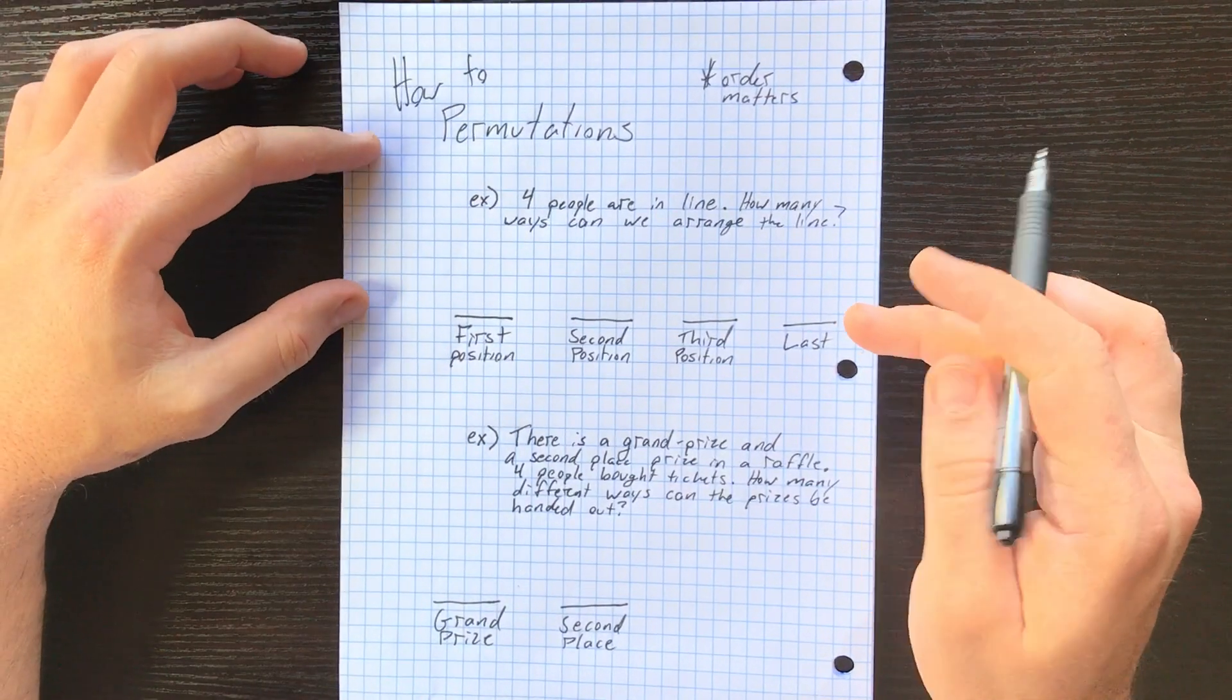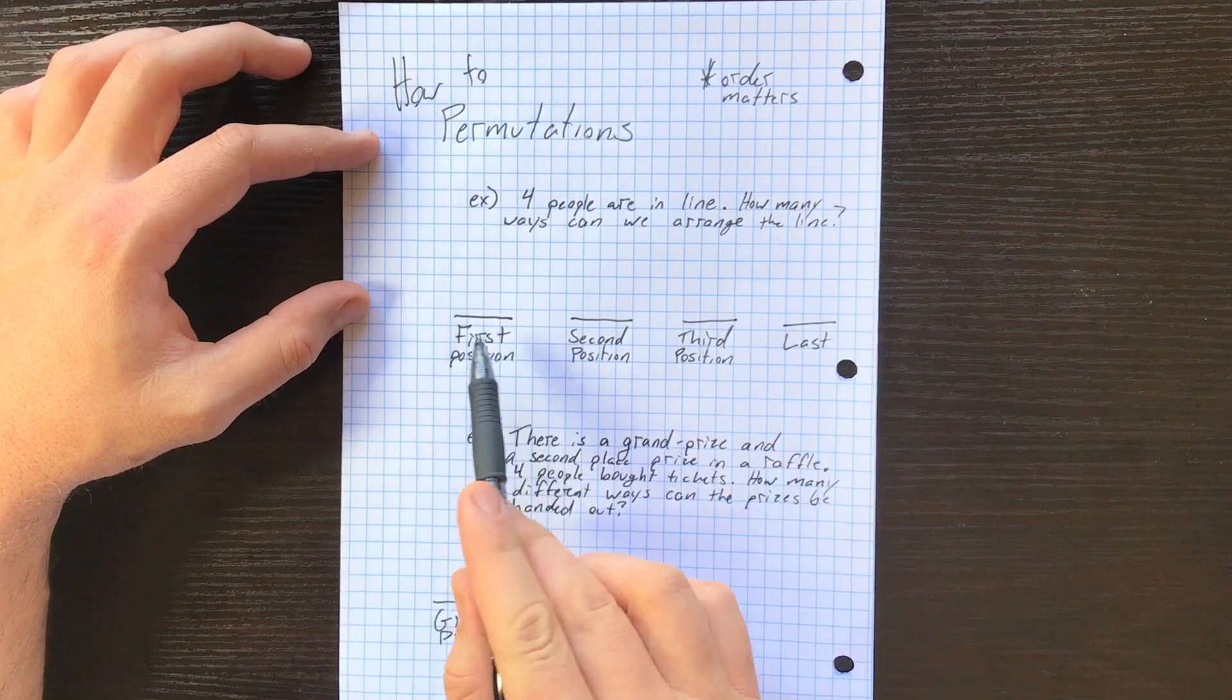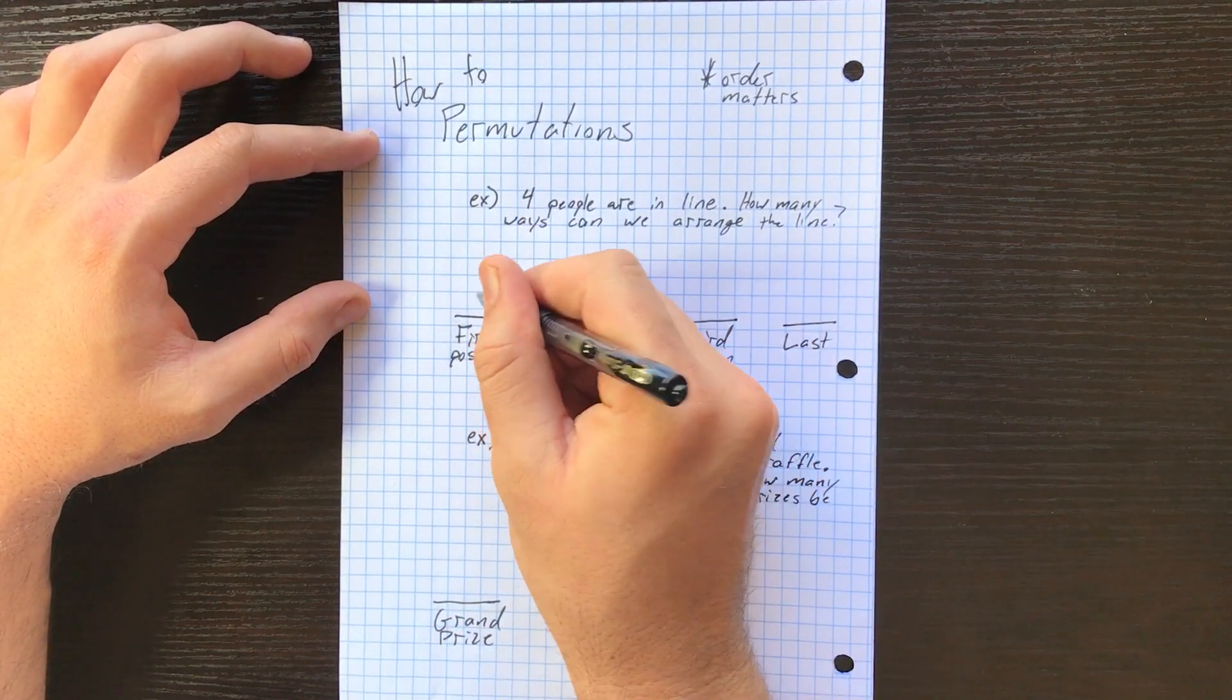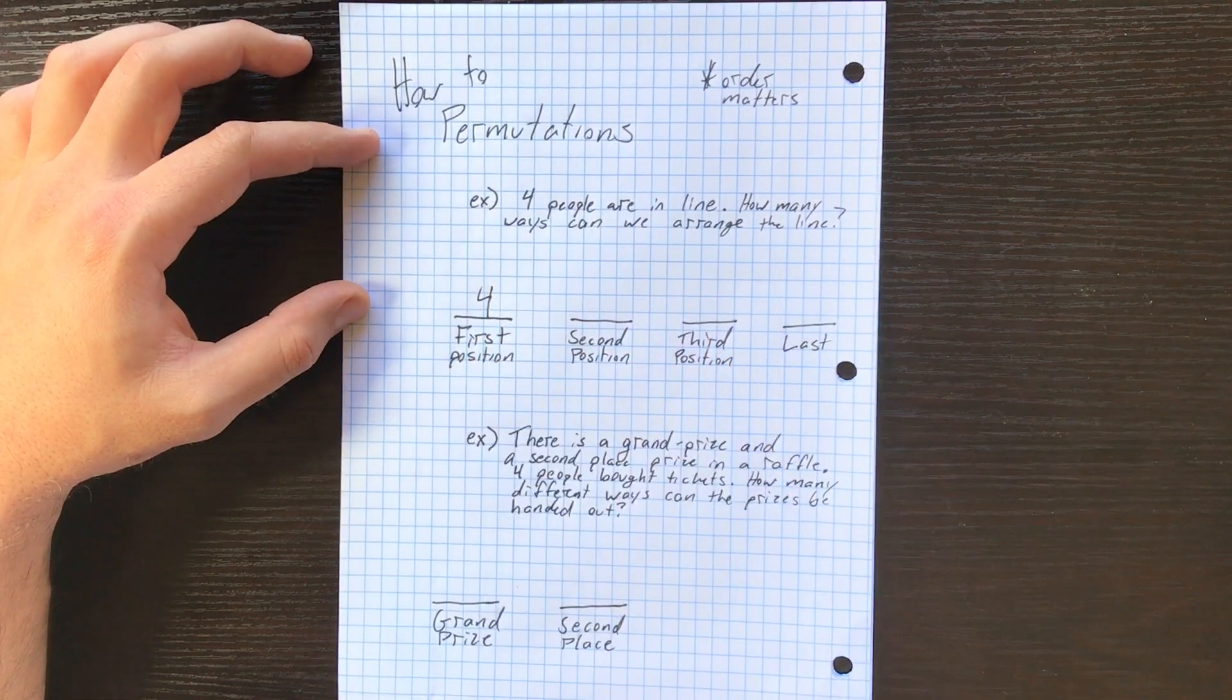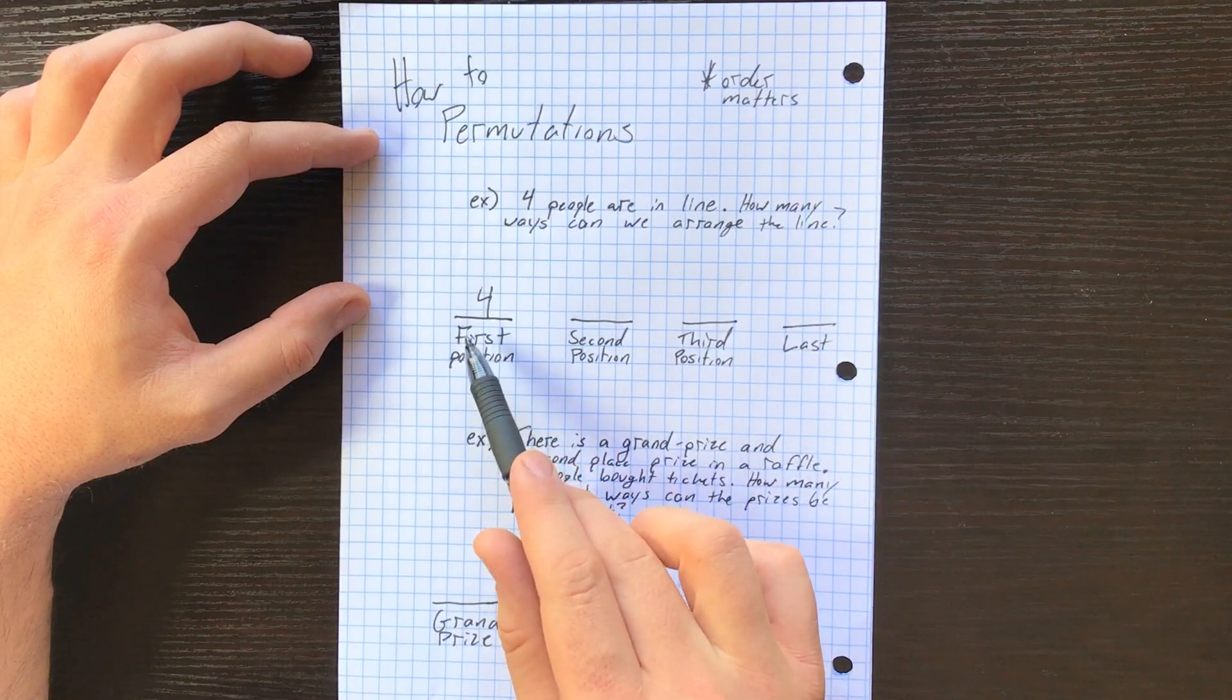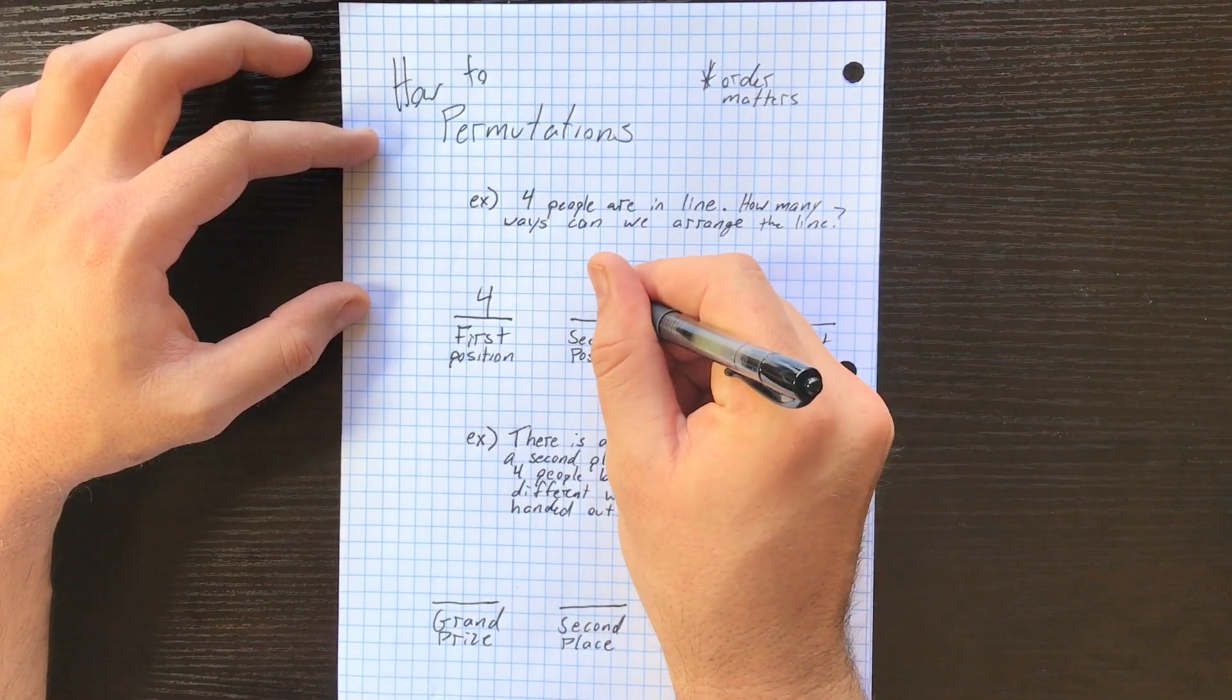How do we solve a problem like this? The first thing you need to do is think to yourself: how many people can get that first position? Well, there are four people in line, so four people could potentially occupy that spot. How many people could get the second position? Well, if we've already picked somebody for that first position, then we only have three left.